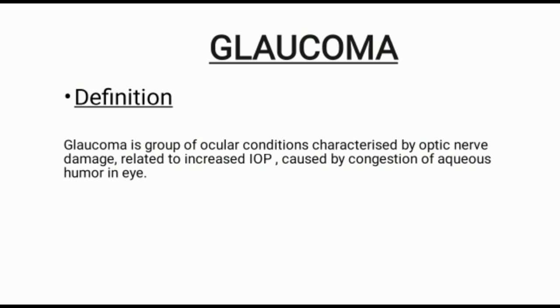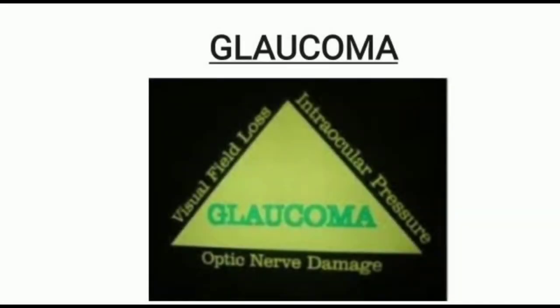Glaucoma is a group of ocular conditions characterized by optic nerve damage related to increased intraocular pressure, caused by congestion of aqueous humor in the eye. In Glaucoma, three characteristics are present: increased intraocular pressure, optic nerve damage, and visual field loss.